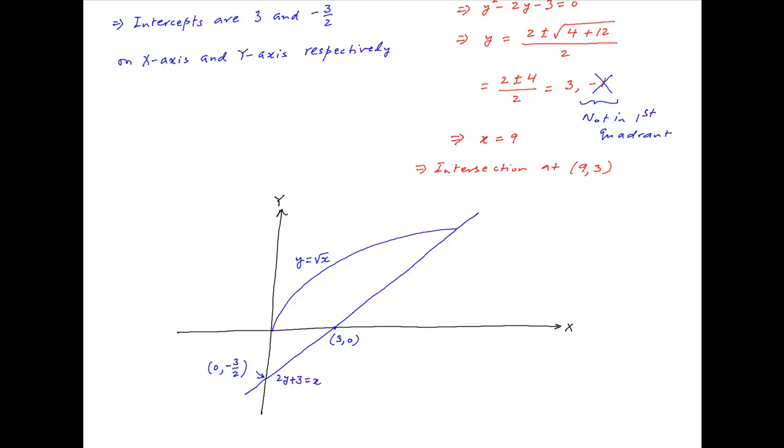We are interested in the area enclosed between the parabola and the line in the first quadrant. To determine this, we find the area of a small strip whose thickness is dy and whose length is equal to the difference between the abscissa of the line, xl, and the abscissa of the parabola, xp, and integrate between y is equal to 0 and y is equal to 3.